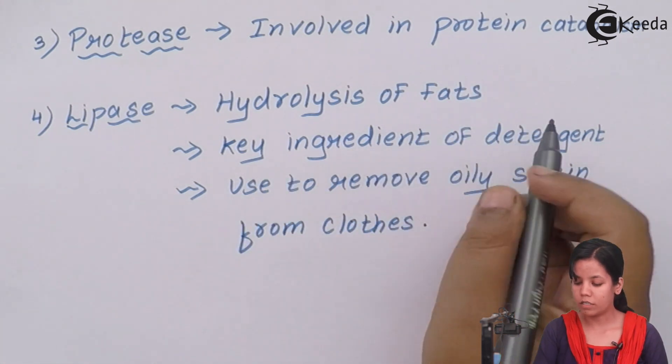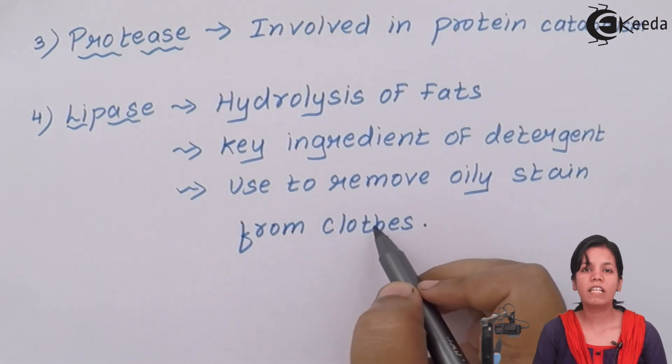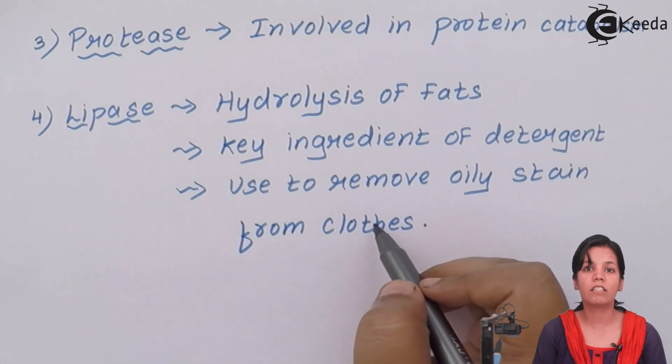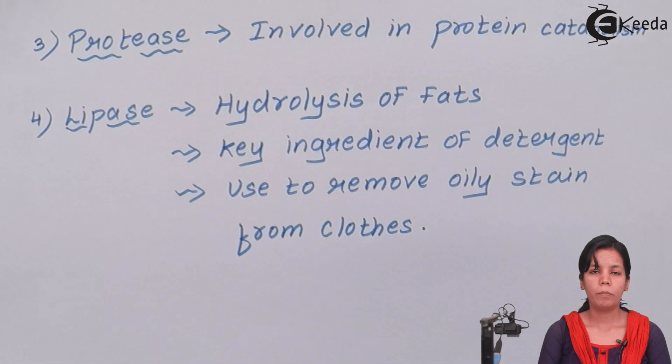The last enzyme is lipases. Lipases help in hydrolysis of fats. It is the key ingredient of detergents used to remove oily stains from clothes. So when you are seen ads, all this advertisements of Arial, Surf Excel in which they show us clothes having stains, basically it contains a large amount of lipase which removes those oily dirty stains. We hope that you understood the topic organic acids and enzymes, thank you.